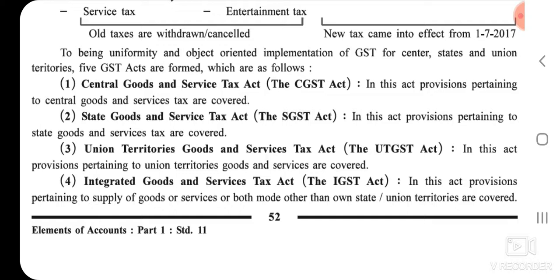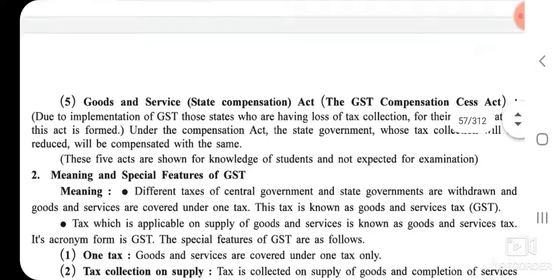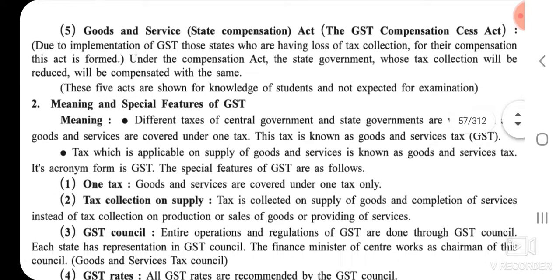The fourth one is the Integrated Goods and Service Tax Act, the IGST Act. In this Act, provisions pertaining to supply of goods or services or both outside of own state or union territories are covered.